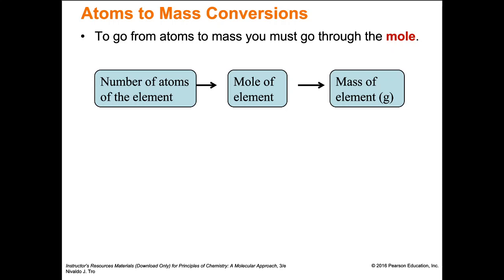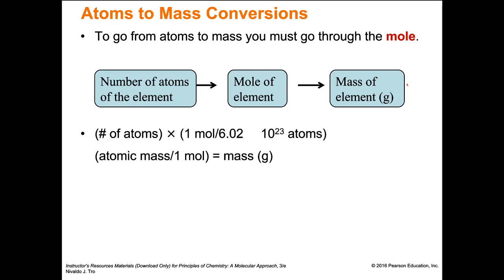To go from the number of atoms to the mass of an element, we go through the mole again. In all of these processes, the mole serves as a bridge. Take the number of atoms times one over Avogadro's number — because we're starting from atoms, we want to cancel atoms and get to moles. Then multiply by the atomic mass, which gives us the mass. Atoms cancel with atoms, moles cancel with moles, and we're left with mass.